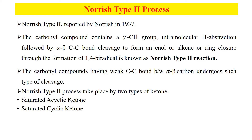What are Norrish type 2 reactions? The carbonyl compounds having a gamma hydrogen undergo intramolecular hydrogen abstraction followed by alpha-beta carbon-carbon bond cleavage. The products are enol and alkene. The enol is tautomerized to the keto form, or the ring closes through the formation of a 1,4-biradical. The carbonyl compounds having a weak carbon-carbon bond between alpha and beta carbon undergo such type of cleavage.